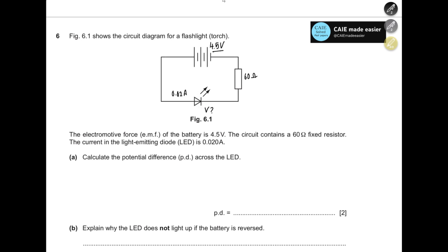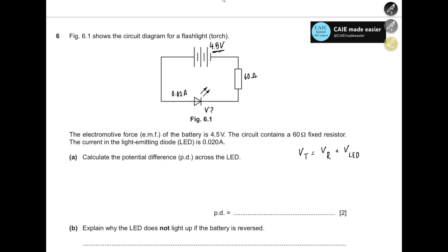The voltage coming from the battery is 4.5 volts, but voltage is not the same across the entire circuit because there are some lost volts. Total voltage equals voltage across the resistor plus voltage across the LED. Using V = IR for the resistor: V = 0.02 × 60 = 1.2 V. So voltage across the LED = 4.5 − 1.2 = 3.3 volts.